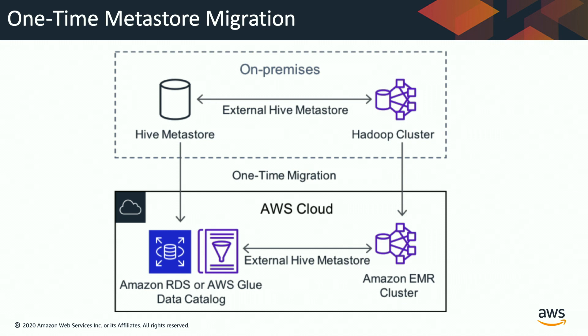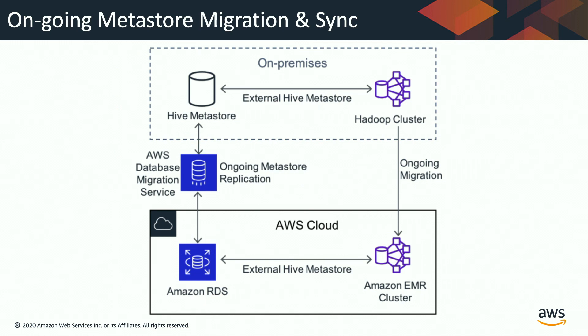Looking at the diagram: on top is the on-premise environment with a Hadoop cluster pointing to a Hive Metastore in your on-prem database. With a one-time migration, you offload the entire Metastore to Amazon EMR using Glue Catalog or RDS. For continuous or sync-based migrations, you use replication applications such as AWS DMS, which reads your on-prem database and updates the RDS database so that both source and target Metastores stay in sync.